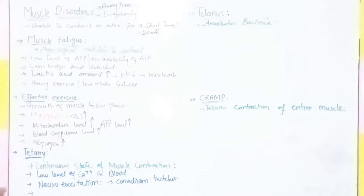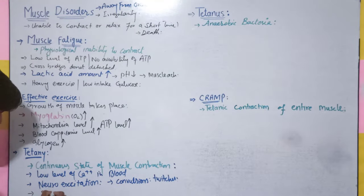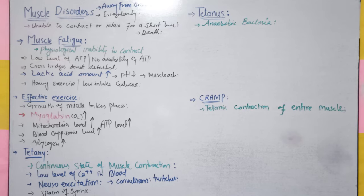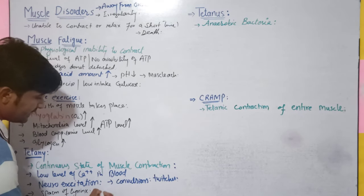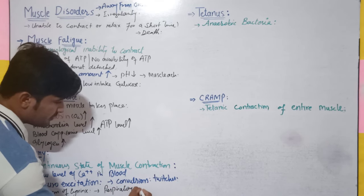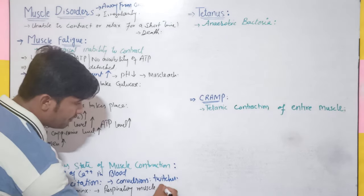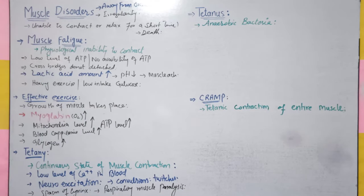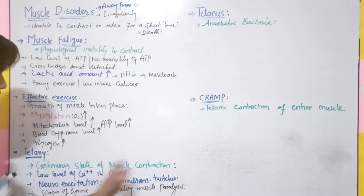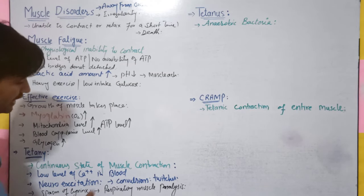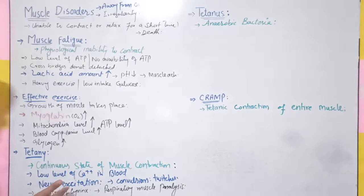Tetany ki treatment bahut zaroori hoti hai. Agar treatment na karwai jaye to spasm of larynx ho jaata hai — larynx akra jaata hai — ya phir respiratory muscles mein paralysis ho jaata hai, yaani respiratory falij. Sans lene mein diqqat hogi, intercostal muscles kaam nahi karenge, jis se dear students death ho jaati hai.